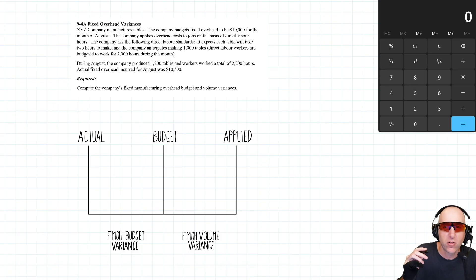Let's read through the problem and I'll show you the easy part and then I'll spend some time explaining the harder part. XYZ company manufactures tables. The company budgets fixed overhead to be $10,000 for the month of August. The company applies overhead cost to jobs on the basis of direct labor hours. So if we're given this type of information in an accounting question, you always want to be trying to calculate predetermined overhead rates if you can.